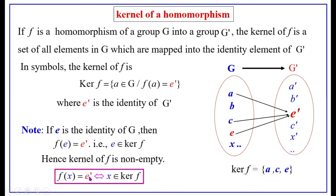F(X) equals E' if and only if X belongs to ker(F). That is, if F of any element X of the domain group equals the identity element E' of the co-domain group G', then X must be in ker(F). Conversely, if X belongs to ker(F), then it must satisfy F(X) equals E'.